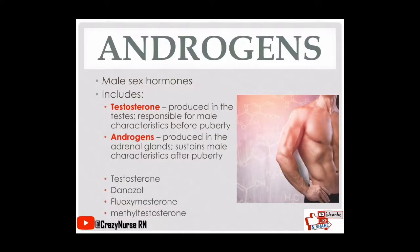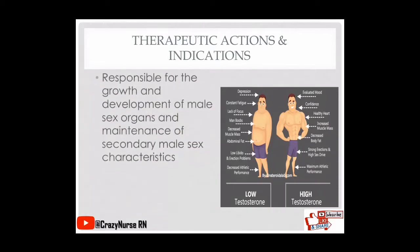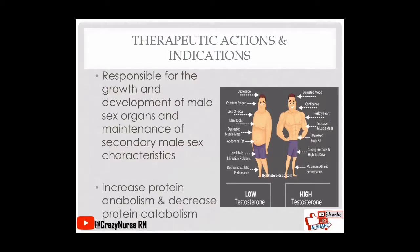Examples of androgens include testosterone, danazol, fluoxymesterone, and methyltestosterone. The word 'testosterone' is often reflected in the drug name. Therapeutically, androgens are responsible for the growth and development of male sex organs, maintenance of secondary male sex characteristics, increased protein anabolism, and decreased protein catabolism.